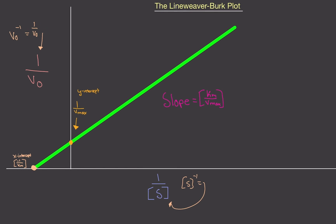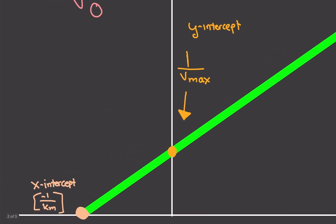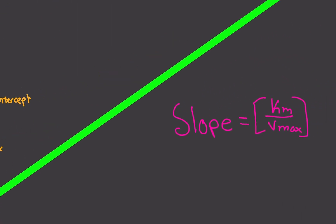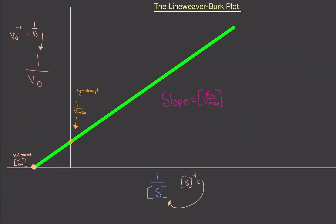Let's analyze this plot before we do the practice problem. The Y-intercept, where the line crosses the Y-axis, is one over Vmax — please be careful, this is not the Vmax value itself, it's one over Vmax. The X-intercept is negative one over Km — again, this is not the Km value, it's the reciprocal of it. The slope of the line is Km over Vmax, not Vmax over Km.